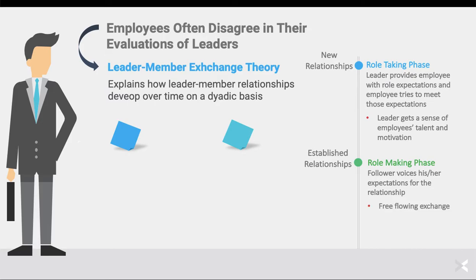With the role-making phase, we start to see free-flowing exchange — dialogue between the leader and the follower where both are contributing to the conversation. In general, if the employee is doing a good job, the leader will start to offer more opportunities and resources, and by having more opportunities and resources, the follower should offer more effort. We see this in established relationships that are positive in nature. Not all relationships will make it to this role-making stage — some relationships are going to be much stronger than others. There are two different types of relationships that can be formed between a leader and a follower.